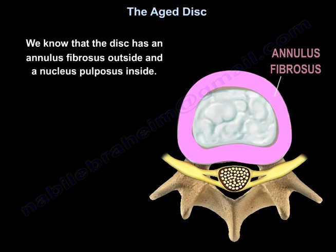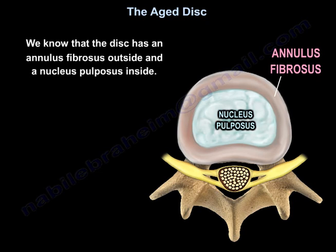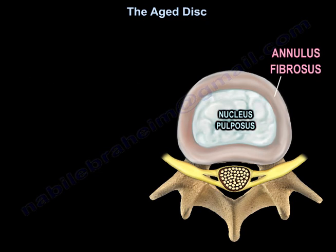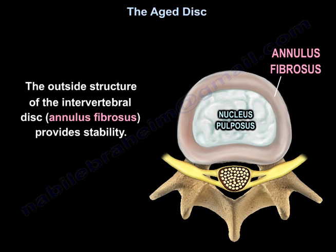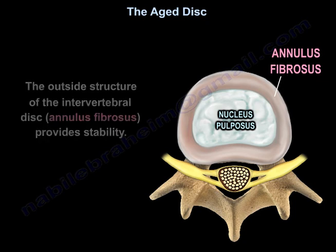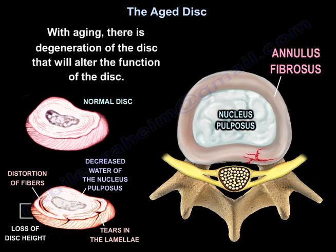The aged disc: we know the disc has an annulus fibrosus on the outside and nucleus pulposus inside. The outside structure of the intervertebral disc, the annulus, provides stability. With aging, there is degeneration of the disc that will alter the function of that disc.